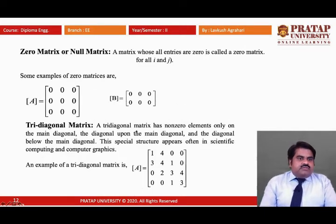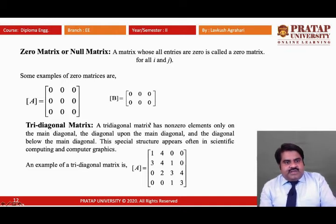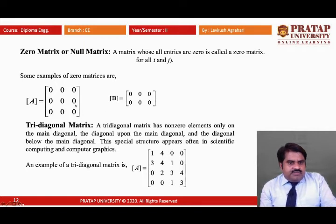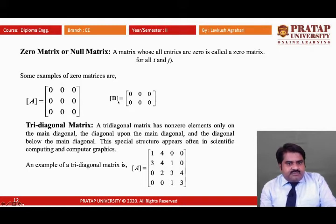Now, the zero matrix or null matrix. As the name suggests, any matrix having all its entries equal to zero is called a null matrix or zero matrix. Two examples: matrix A with 3 rows and 3 columns — all elements are zero, so this is a null matrix. Matrix B with 2 rows and 3 columns is also a null matrix with all elements zero.